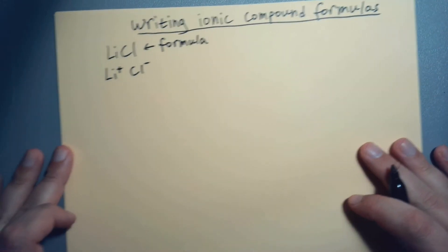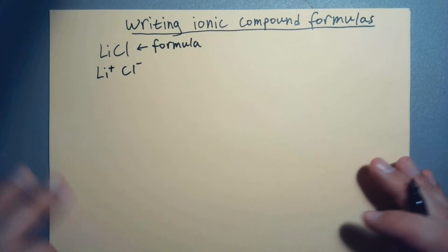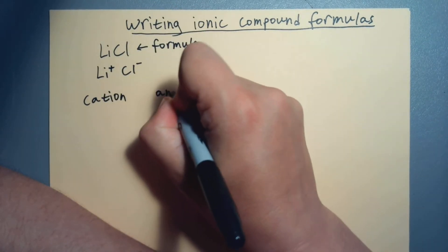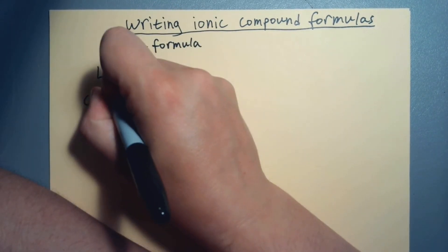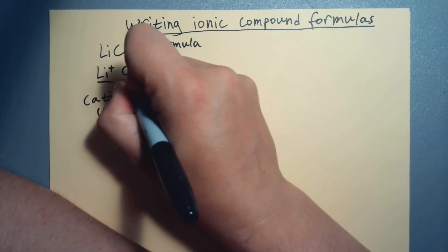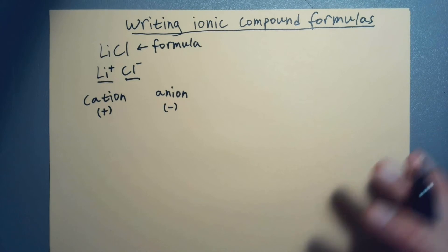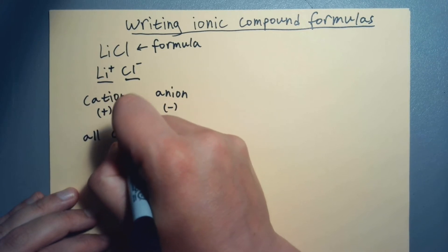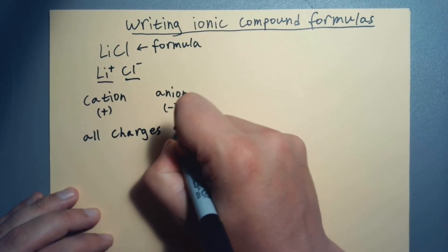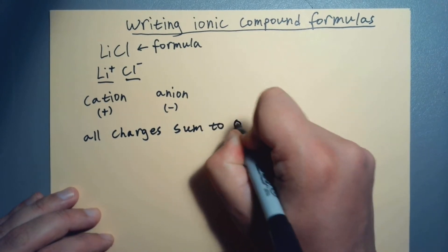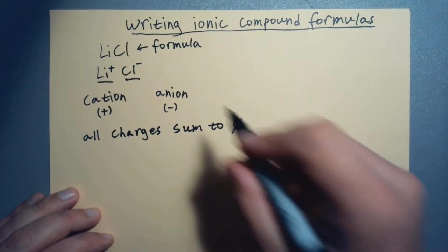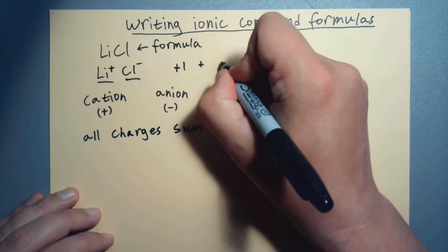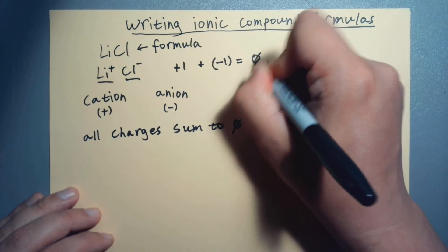Now there's a couple details with this. We always write our formula cation and then anion. So we have the positive charge thing first, which is what we have here. We have the negative charge thing last, which we have here. And then all charges sum to zero. So we have a plus one and we add to that a minus one, and that gets us a zero.